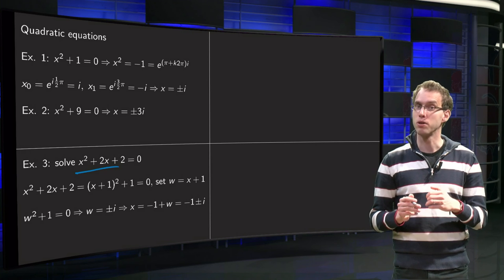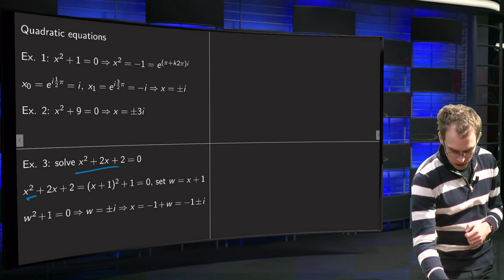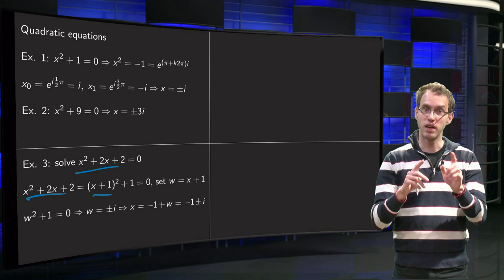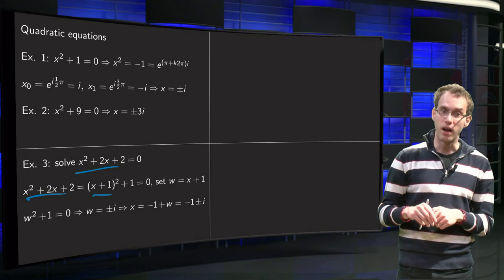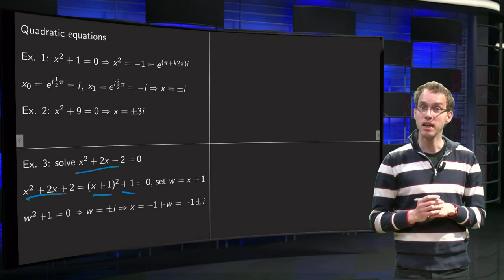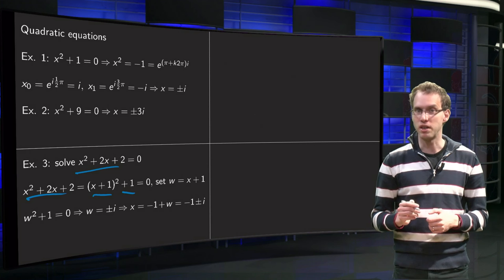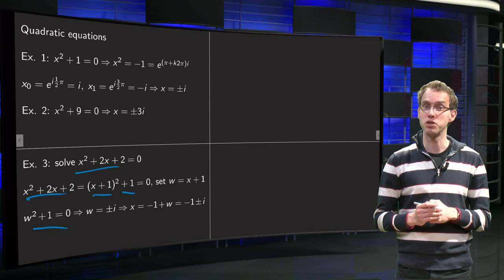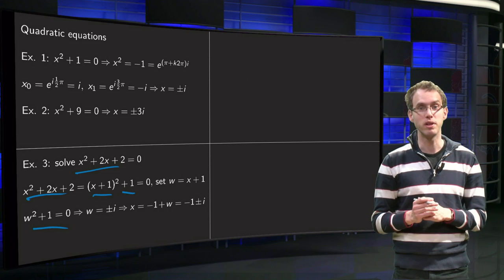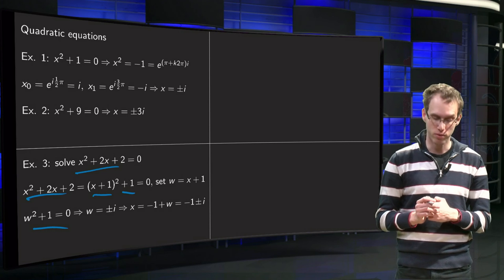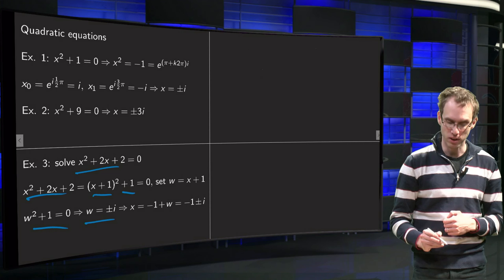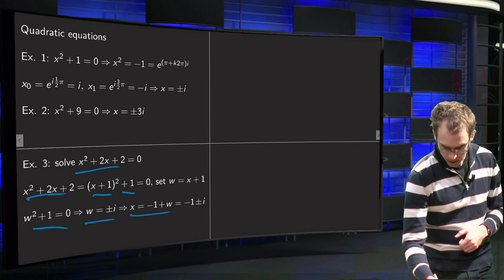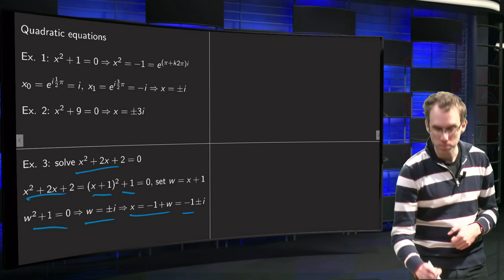In that case you can complete the square. x squared plus 2x plus 2 equals x plus 1 squared — but x plus 1 squared gives x squared plus 2x plus 1, so we're missing 1 and have to add it — plus 1 equals 0. Then set w equals x plus 1, which gives w squared plus 1 equals 0. You just solved that: w equals plus or minus i. Then x equals w minus 1, so x equals minus 1 plus or minus i.